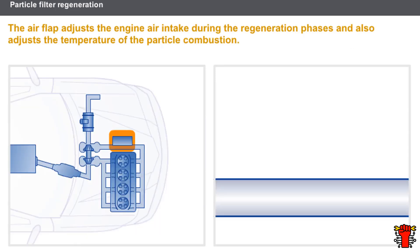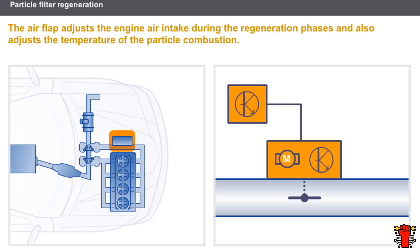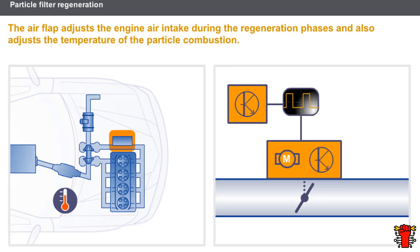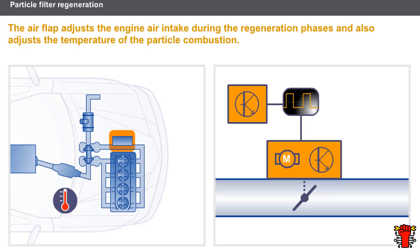An air flap is fitted inside the air inlet tract. The injection computer sends an RCO signal corresponding to the opening value required. The air flap adjusts the engine air intake during the regeneration phases and also adjusts the temperature of the particle combustion. When the engine is switched off, the flap acts as a damper valve to prevent engine vibration.